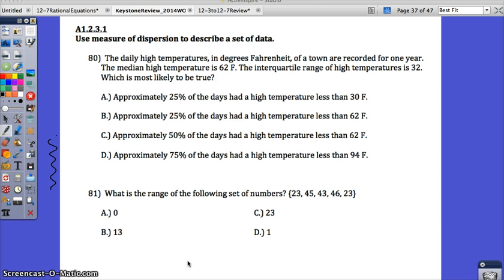Alright, let's take a look at number 80. The daily high temperatures in degrees Fahrenheit of a town are recorded for one year. The median high temperature is 62. The interquartile range of high temperatures is 32, which is most likely to be true. When I see median and interquartile range, I'm thinking box and whisker.